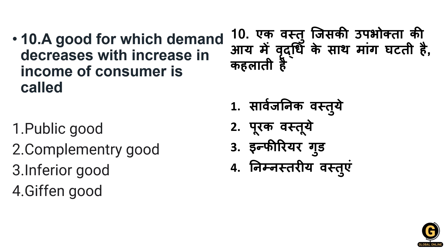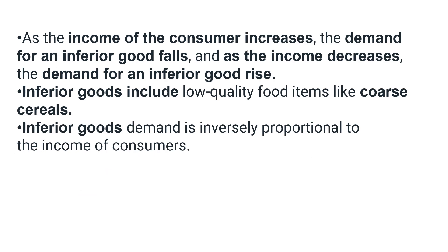Question ten: a good for which demand decreases with an increase in the income of the consumer is called what? Options are public goods, complementary goods, inferior goods, and Giffen goods. The correct answer is option C: inferior goods. As the income of a consumer increases, demand for inferior goods falls, and as income decreases, demand for inferior goods rises — a vice versa condition. Inferior goods include low quality food items like coarse cereals. Demand for inferior goods is inversely proportional to the income of the consumer.